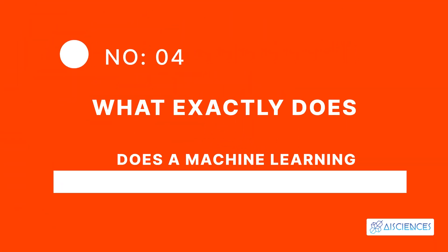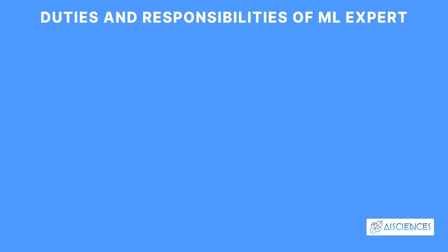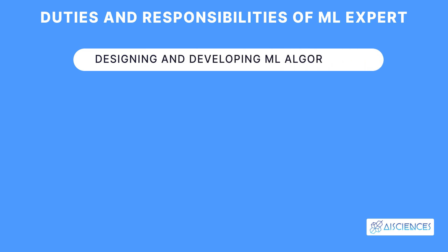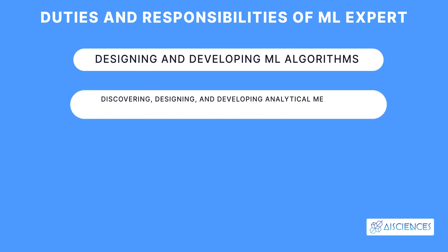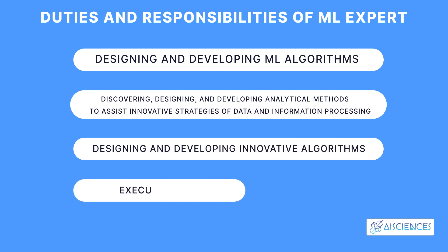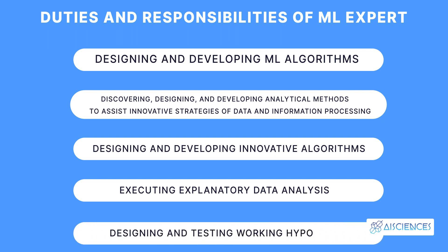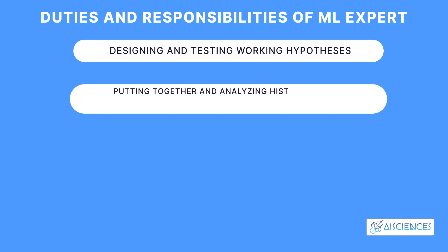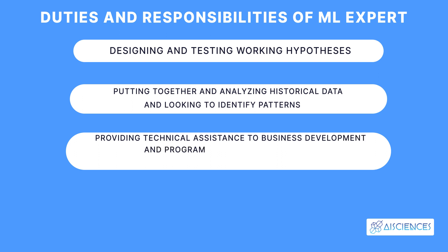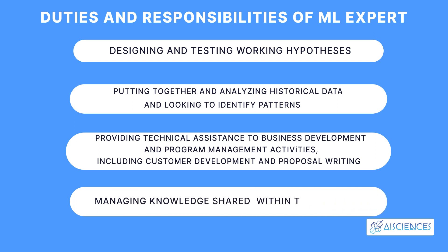What exactly does a machine learning expert do? The duties and responsibilities include: designing and developing machine learning algorithms; discovering, designing, and developing analytical methods to assist innovative data processing strategies; executing exploratory data analysis; designing and testing working hypotheses; analyzing historical data to identify patterns; providing technical assistance for business development and program management activities including customer development and proposal writing; and managing knowledge shared within the company.